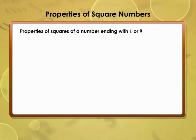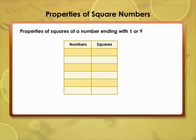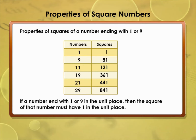Properties of squares of a number ending with 1 or 9: the square of 1 is 1, the square of 9 is 81, the square of 11 is 121, the square of 19 is 361, the square of 21 is 441, the square of 29 is 841. We can conclude that if a number ends with 1 or 9 in the unit's place, then the square of that number must have 1 in the unit's place.